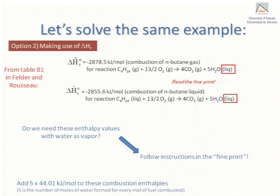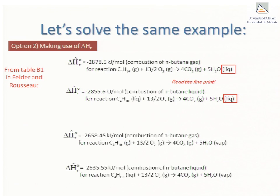In this particular case five moles of water formed for every mole of butane combusted so that we would need to add five times 44.01 kilojoules per mole to each of the combustion enthalpies. The resulting combustion enthalpies are the ones shown here.